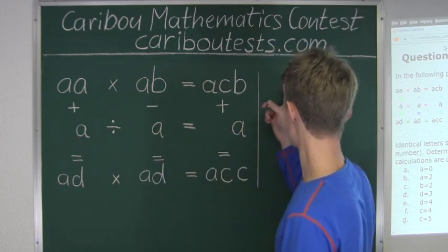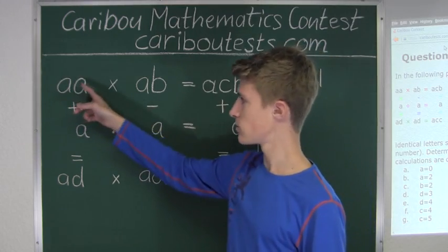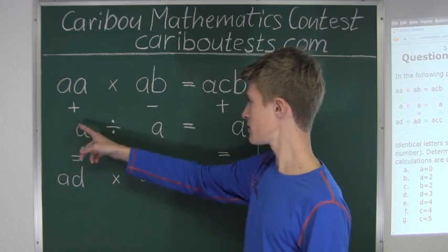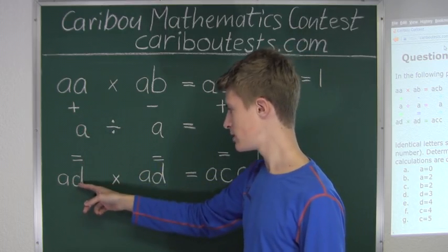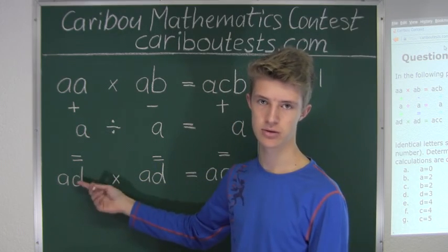So we have AA, which we know is, A is 1, so 11, which is 11. 11 plus 1 is equal to 12, which means that D would equal to 2.